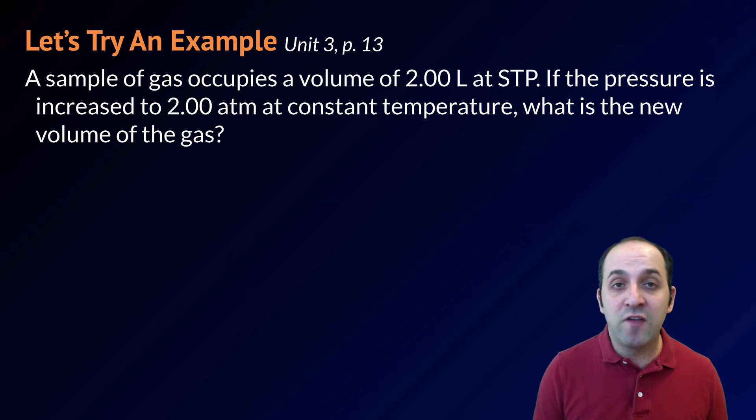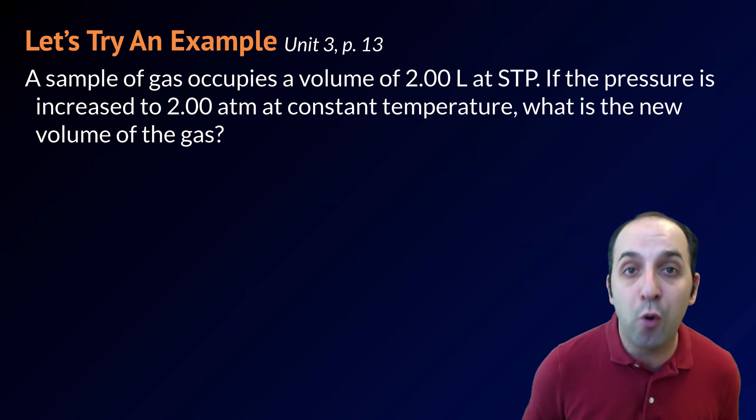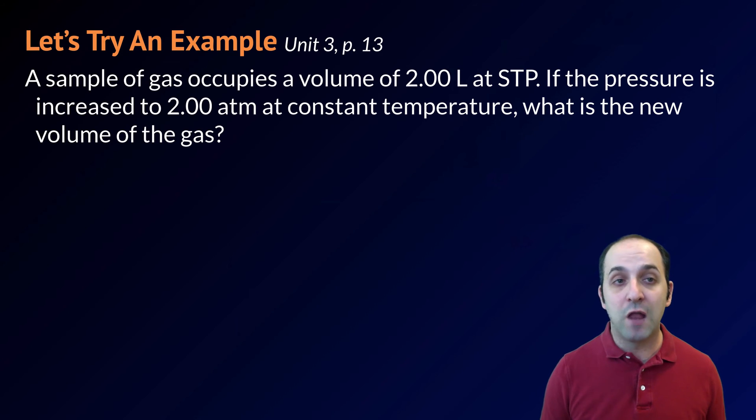Let's try an example from our packet. This one's on page 13. A sample of gas occupies a volume of 2.00 liters at STP. If the pressure is increased to 2.00 atmospheres at constant temperature, what is the new volume of the gas? Pause the video and try to solve this on your own. And then when you're ready, let's go through the solution together.